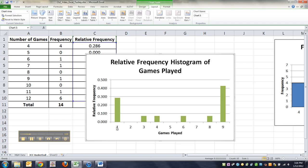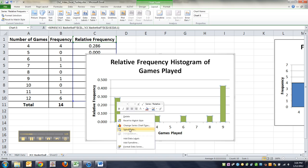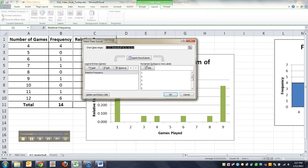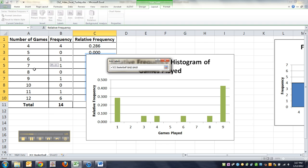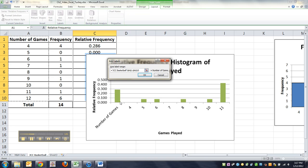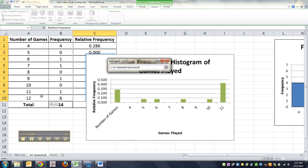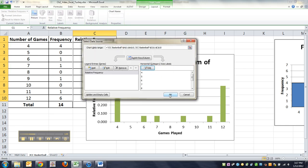Now remember there's two big problems. The horizontal axis is wrong and the bars are not touching. So let me start with the horizontal axis. I'm going to click on the bars, right click, choose select data, edit the horizontal category axis labels, and put in the numbers four through 12. Don't highlight number of games. If you do, it turns it into number of games as your first bar. Don't do that. Highlight just the numbers four through 12.